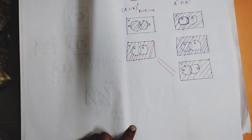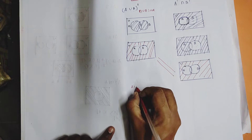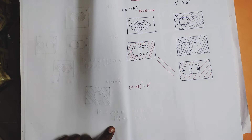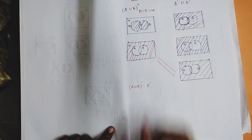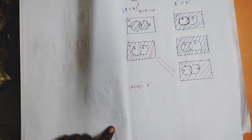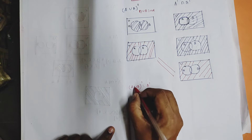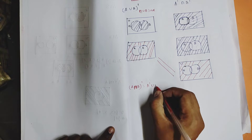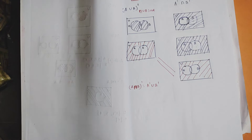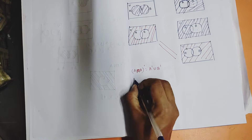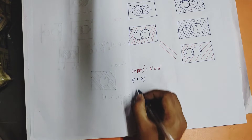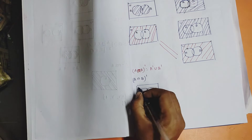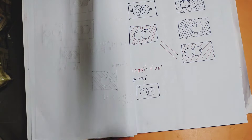Now let us also verify the second De Morgan's law: the complement of A intersection B equals A complement union B complement. Let me first draw the Venn diagram for A intersection B complement. I already know what the A intersection B diagram looks like — universal set, A and B, and shade the common overlapping portion for intersection.